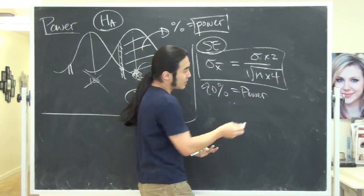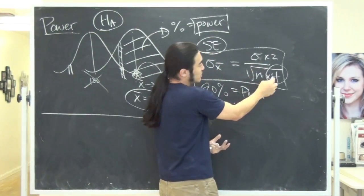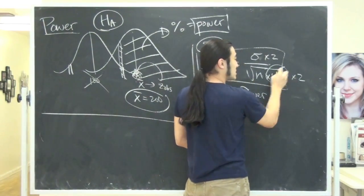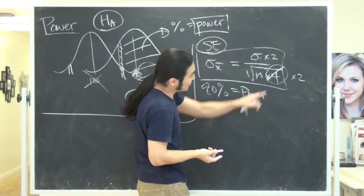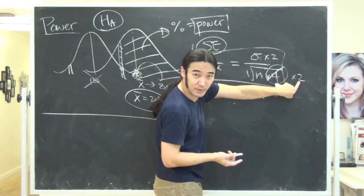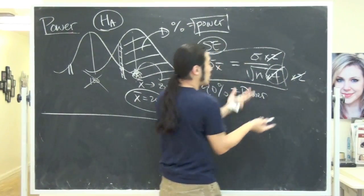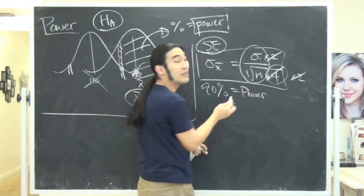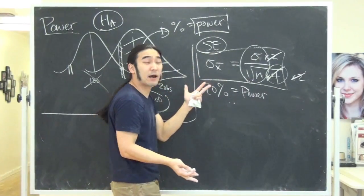But look at what's happening. Because this n, four is under the square root, the square root of four is really the same as times two. And if you're multiplying the top by two and the bottom by two, what really happens to the overall number? Nothing.